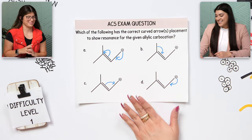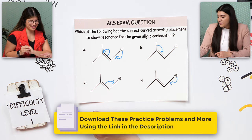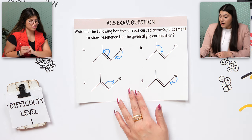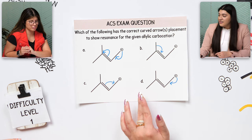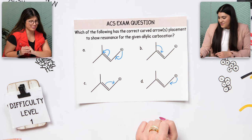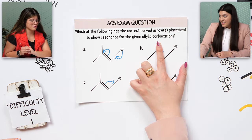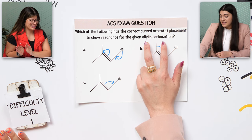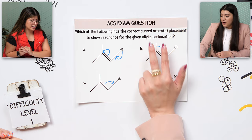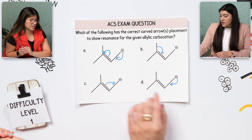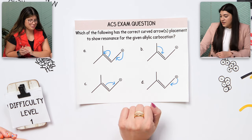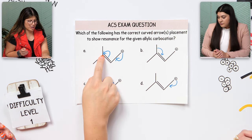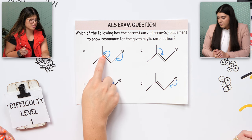Moving on to an ACS exam question that I would say is difficulty level one — not crazy, but let's look at it. Which of the following has the correct curved arrow or arrows placement to show resonance for the given allylic carbocation? If you don't know what 'allylic' means, that's fine — all you have to know is: are the curved arrows correct? Let's start with the first one. Does that look correct? No.